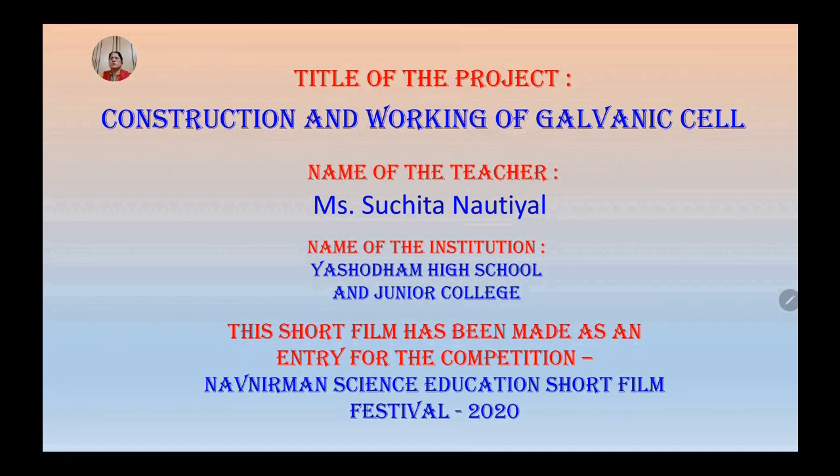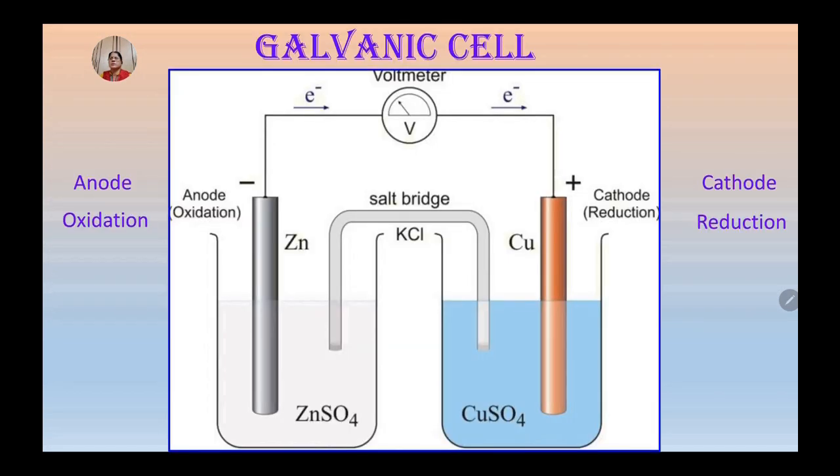Galvanic cell is also known as a Voltaic cell after the name of the scientist Luigi Galvani or Alessandro Volta. It is an electrochemical cell that converts chemical energy of a spontaneous redox reaction taking place within the cell into electrical energy.